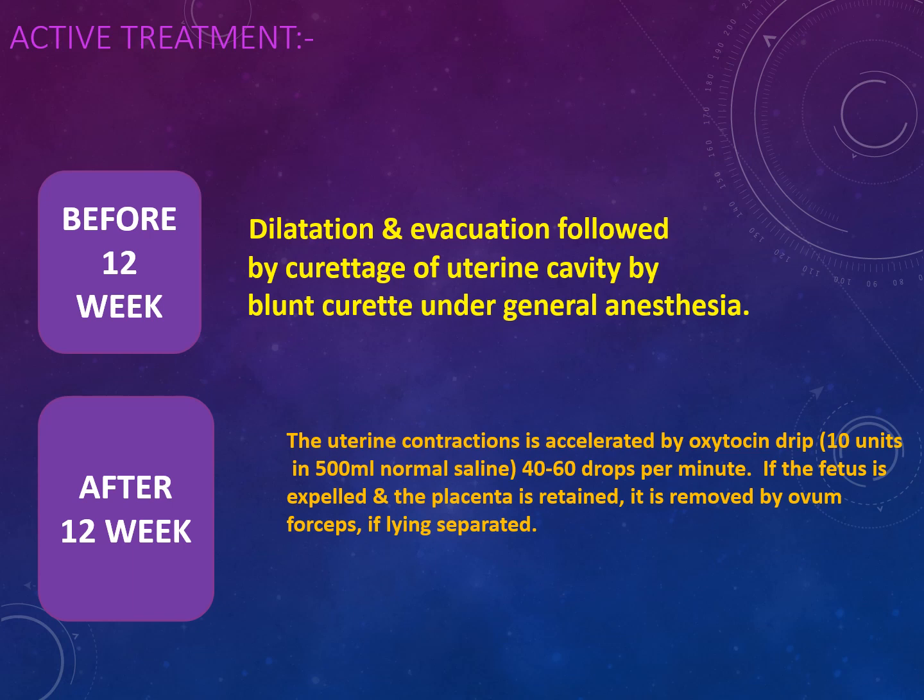If the pregnancy has crossed 12 weeks, management involves initiating uterine contraction by starting an oxytocin drip — 10 units of oxytocin added in 500 ml of normal saline, given at 40 to 60 drops per minute intravenously. When oxytocin enters the circulation, it initiates and speeds up uterine contractions, expelling the baby and placenta. Once the contents have come out, it is our responsibility to confirm the baby is complete and all attachments have been expelled. If anything is left inside, manual removal is done with the help of ovum forceps.